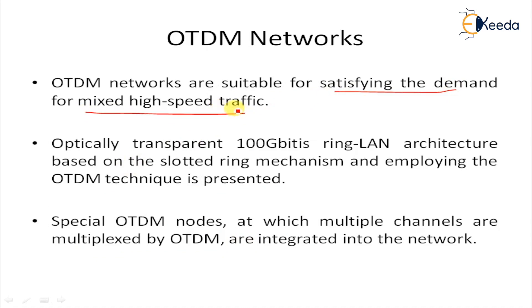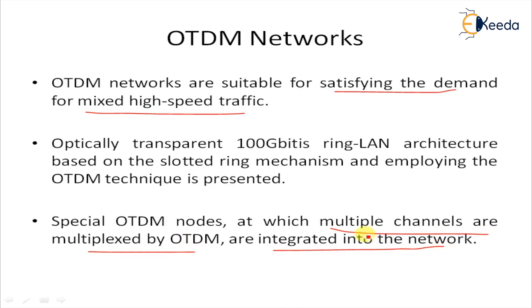There are several theoretical and practical experimental investigations on OTDM networks. Optical transparency is achieved by using optical packets of constant duration, which consist of a variable bit rate payload and a header with a fixed data rate. The spatial mode OTDM node provides different parameters at which multiple channels are multiplexed by OTDM and integrated into the network. The lowest bit rate employed within the network could be 2.5 gigabits per second, corresponding to a particular channel. This can be done by multiplexing various channels of a specific node with respect to the processable bit rate of the destination node.